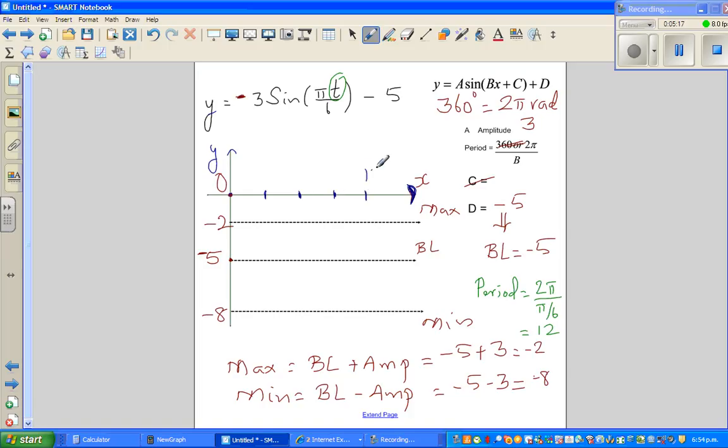The half of 12 is 6, and half of 6 is 3. This is called a scale or a step of 3. So 3, 6, 9, 12. Now your sine graph always starts at baseline, so this is where your sine graph starts.